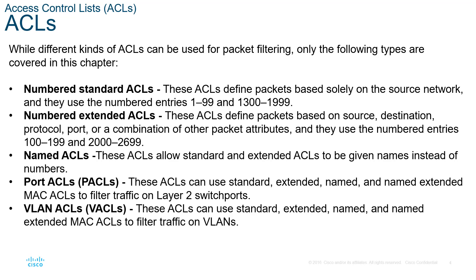ACLs come in a few different flavors: numbered, named, port, or VLAN. For numbered and named, we have two subtypes — standard and extended. A standard ACL filters based on the source only, using numbers 1–99 or 1300–1999. If you need to filter based on the destination or something else, you use an extended ACL, numbered 100–199 or 2000–2699.